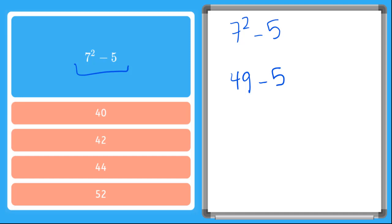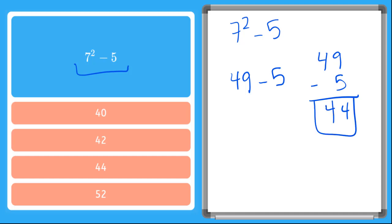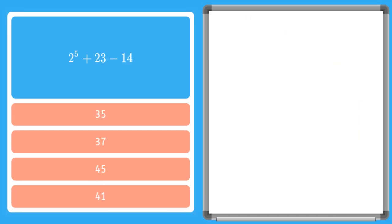We go to the next step: do all addition and subtraction. Forty-nine minus five — we can do it in our head or write it out in standard form. Nine minus five is four, and we bring the four down, so our answer is forty-four. Now let's try one with three terms in the expression.